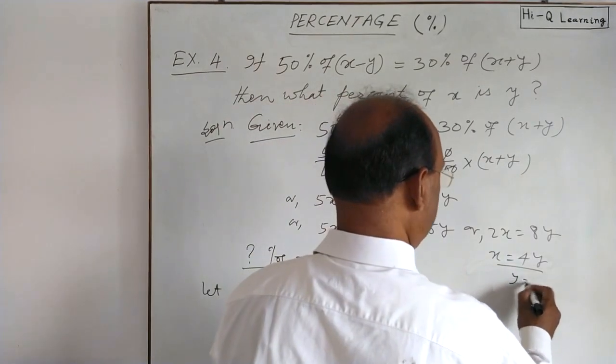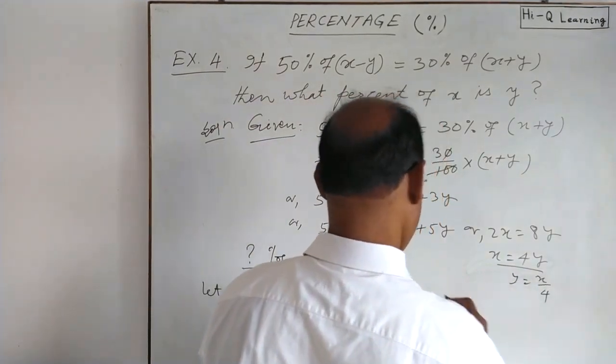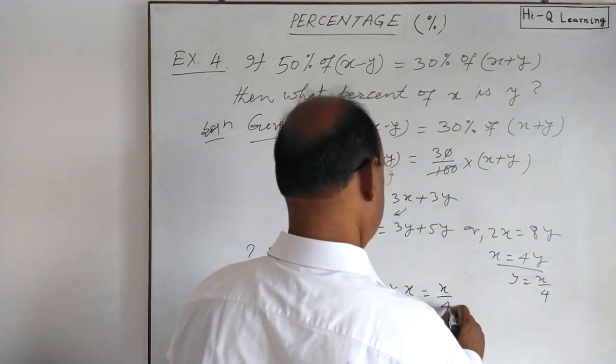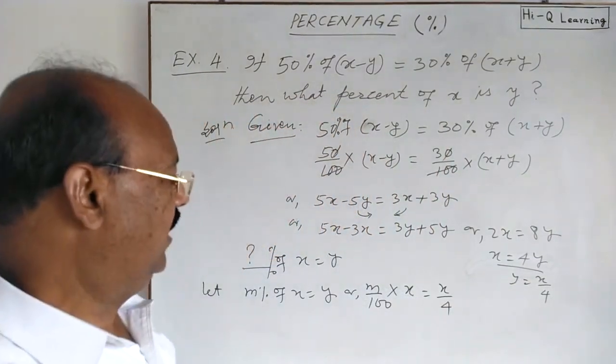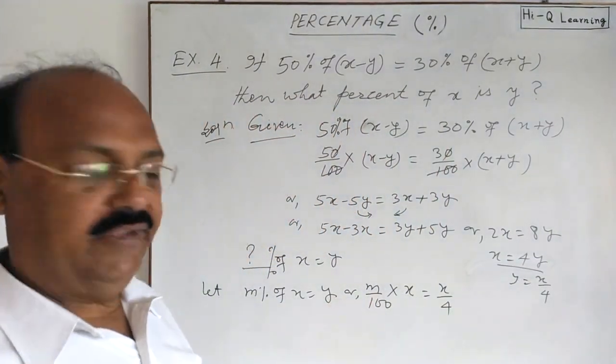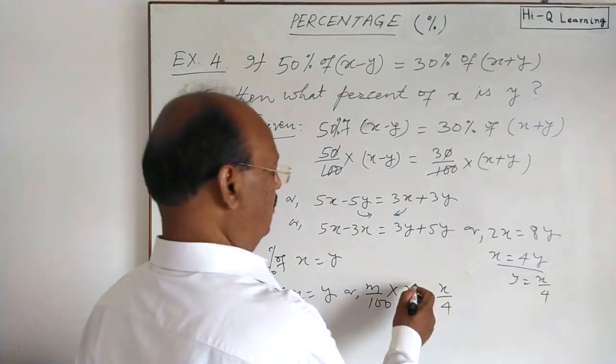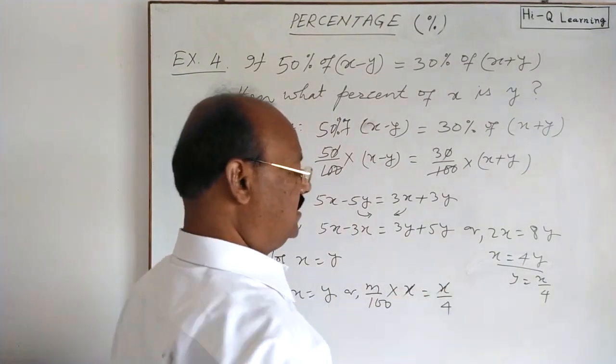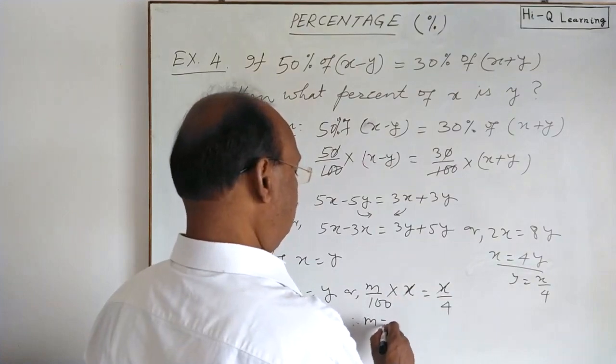Here, y is equal to x by 4. So, this is x by 4. Let us simplify it and we will find out the value of m very easily. Here, x will be cancelled out from both the sides and m is equal to